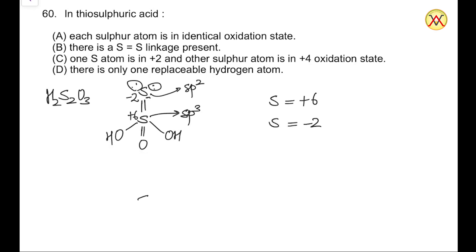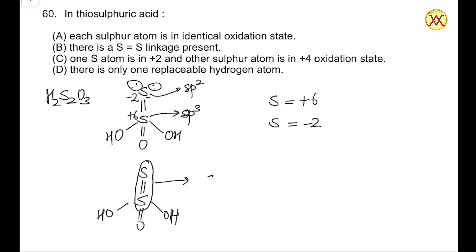From the structure, there is a sulfur double bond sulfur linkage present. Drawing the structure again for clarity: S double bond S, with two OH groups attached. This linkage confirms that Option B is correct — there is a sulfur–sulfur linkage present.